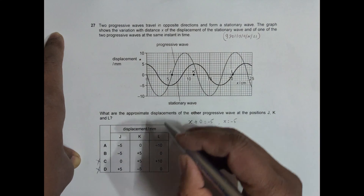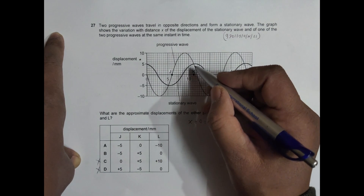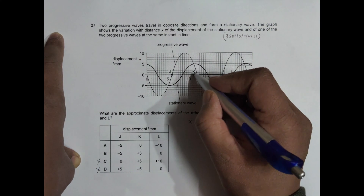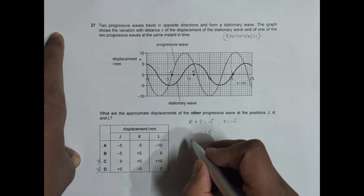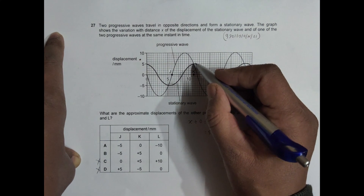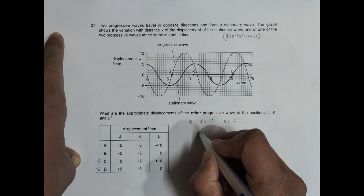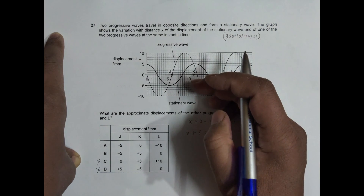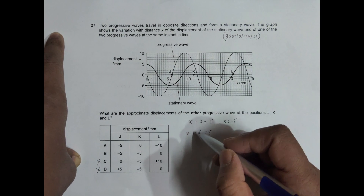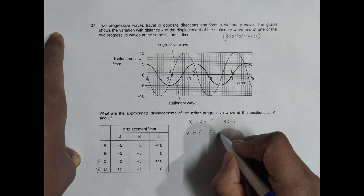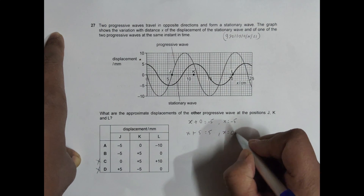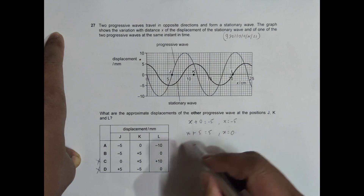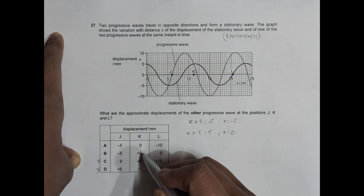Now at point K, the resultant is about 5, and the displacement of the shown progressive wave is also about 5. So the displacement of the other wave plus 5 equals 5, which means X equals 0. So the displacement of the other wave is 0 at this point, which corresponds to choice A — choice B is disqualified.